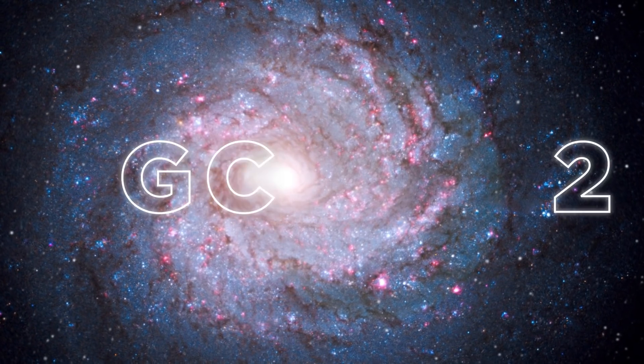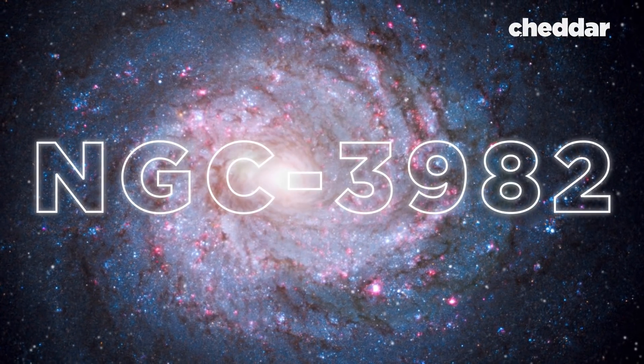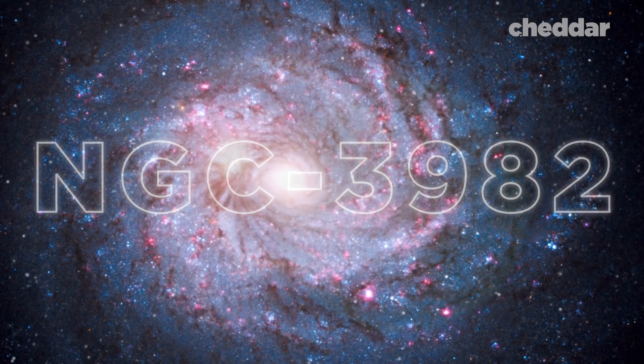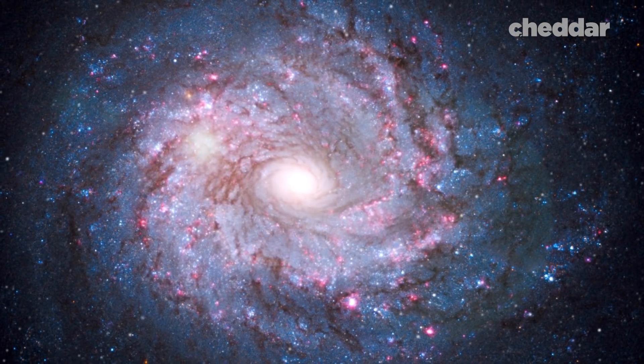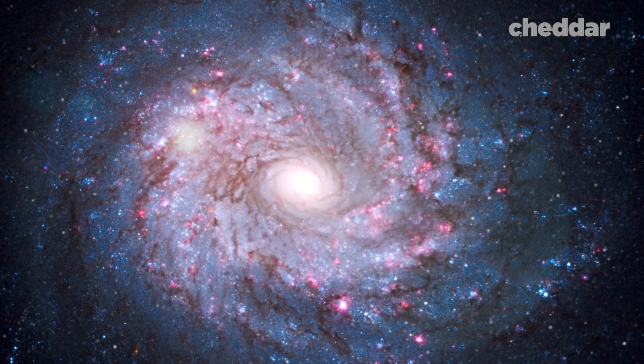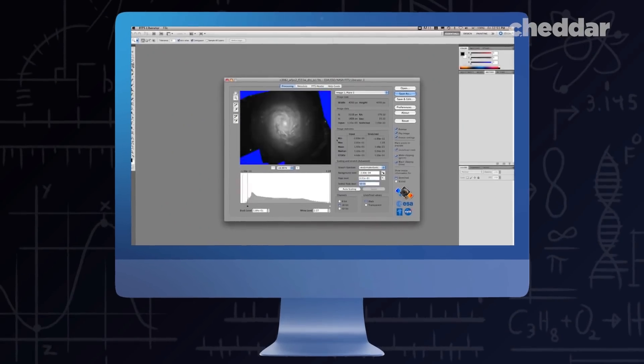This is Spiral Galaxy NGC 3982. What a gorgeous, naturally occurring object in our universe. Well, I mean, it ends up being gorgeous after all this work.